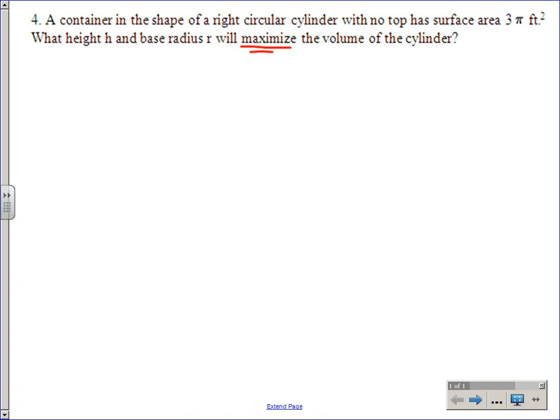You get the maximum or the minimum of something by getting a function and taking the derivative and setting it to zero, because maxes and mins happen where we have horizontal tangents on the function. So that's what we have to do.